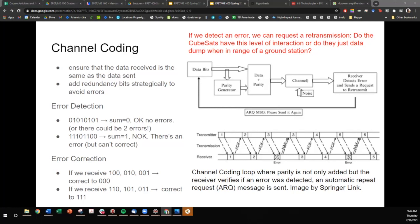Channel encoding is a coding scheme to ensure that the data is received in the same way that the data was sent and it adds redundancy bits strategically to avoid errors. So there are two activities, detection and correction. Let's just look here. Here is a detection method where you just check the sum of the bits. If the sum is equal to zero, then there were no errors. Or maybe there were two errors. The counterpart is that if the sum of the bits is equal to one, then it's not okay. There is an error. But with error detection, this method doesn't correct, it just detects.